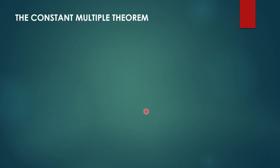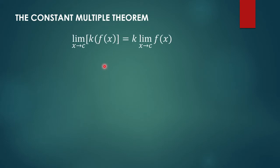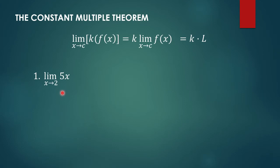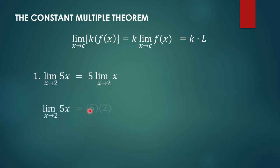Another theorem is the Constant Multiple Theorem. The limit of k times f of x as x approaches c can also be expressed as k times the limit of f of x as x approaches c. For example, we have the limit of 5x as x approaches 2. We can write this as 5 times the limit of x as x approaches 2. Based on our previous theorem, the limit of x as x approaches 2 is 2, so we have 5 times 2, which equals 10.